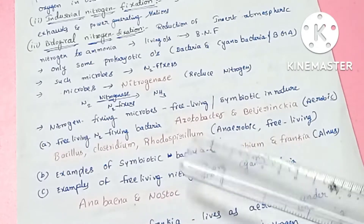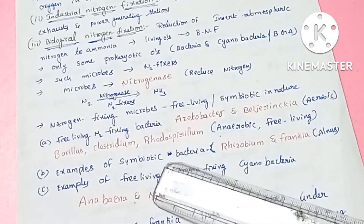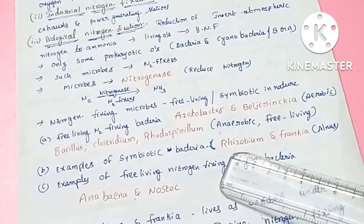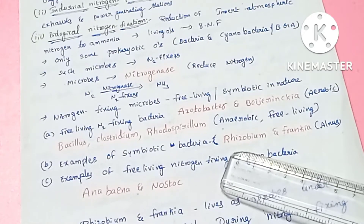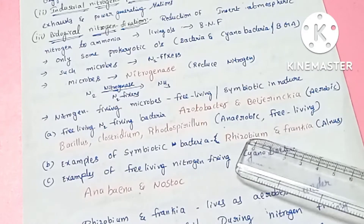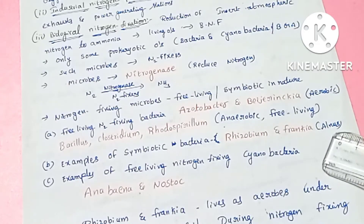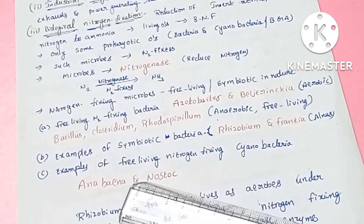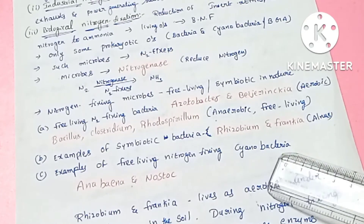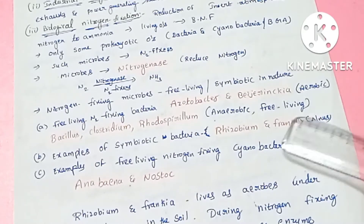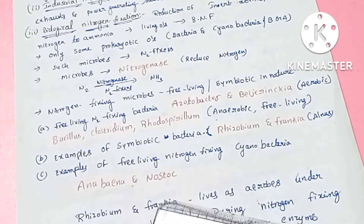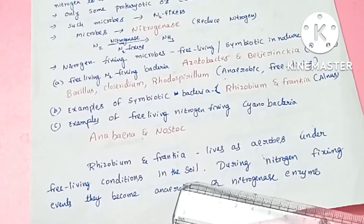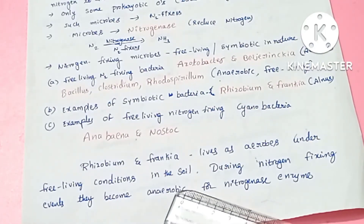There are also symbiotic bacteria in the soil. One example is Rhizobium and Frankia. Rhizobium forms a symbiotic association with leguminous plants such as pulses and beans, forming nodules in their roots. Frankia forms a symbiotic association with Alnus plants. Free-living nitrogen-fixing cyanobacteria — also known as blue-green algae — such as Anabaena and Nostoc are also important nitrogen fixers.